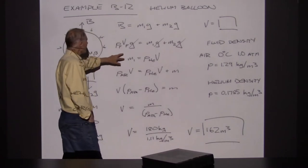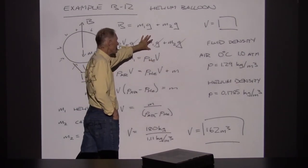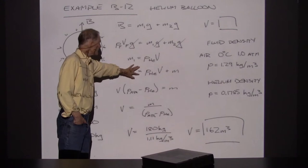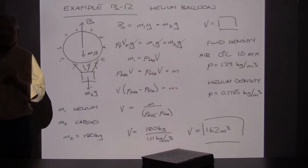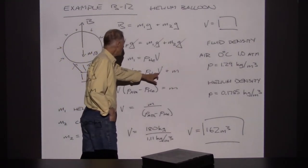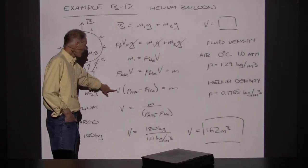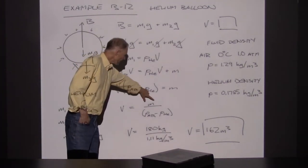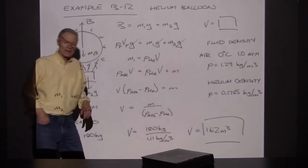The mass of the helium is density of helium times the volume, so substituting in: density of air times volume of balloon equals density of helium times volume of balloon plus M2. Since the displaced air volume equals the volume of helium, I can solve for the volume. The volume of the balloon equals M2 divided by the difference in density between air and helium.